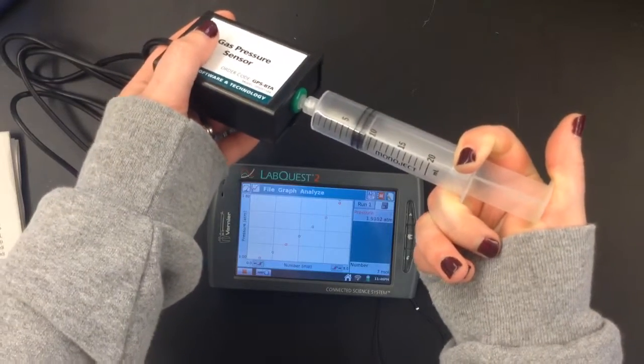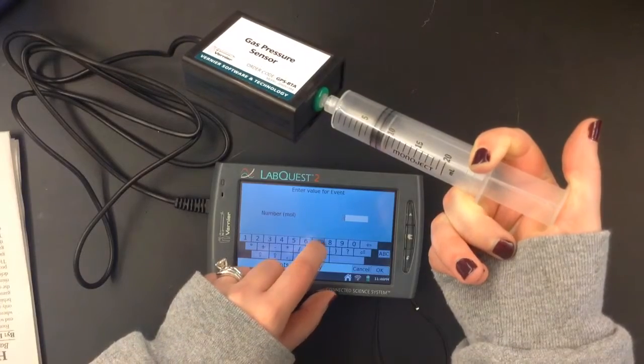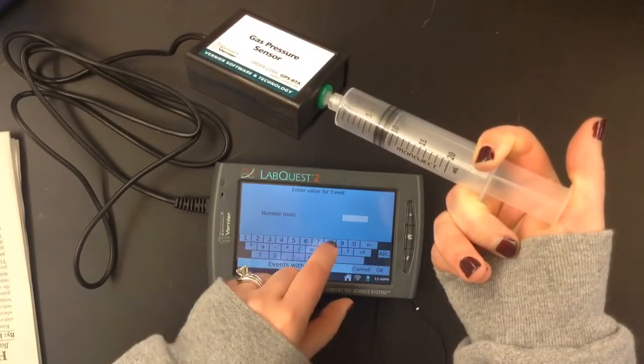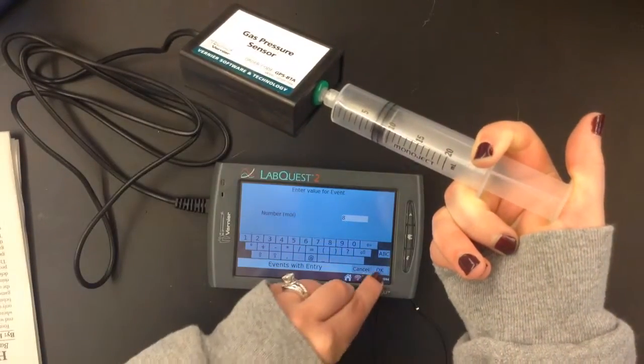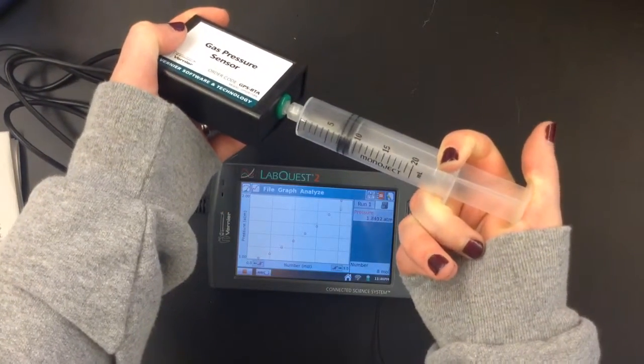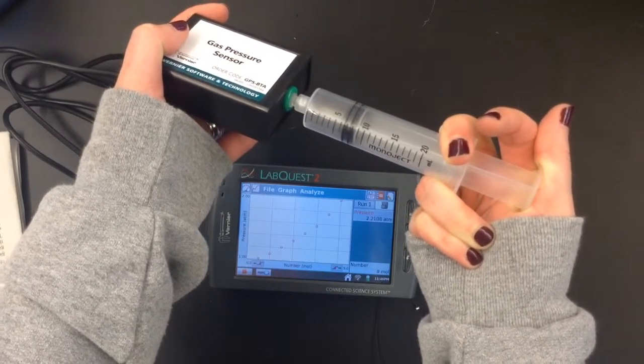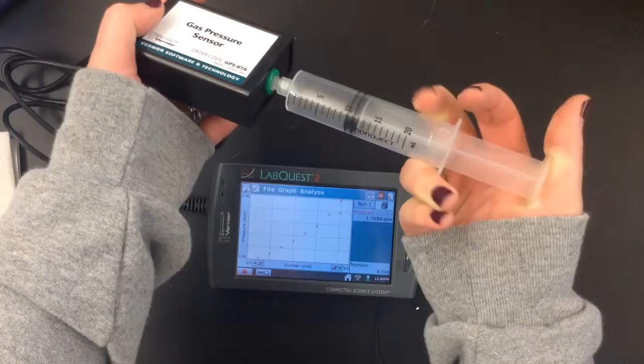And then I'm going to go one more. I'm down at 7. Oops. That's not what I meant to type. So now I've added 8 moles of gas. And as I push the syringe in, it's getting harder and harder to push it in farther. I probably couldn't. I can barely get it down to 6. But I'm not going to go ahead and record a data point there because it's getting really hard to hold.